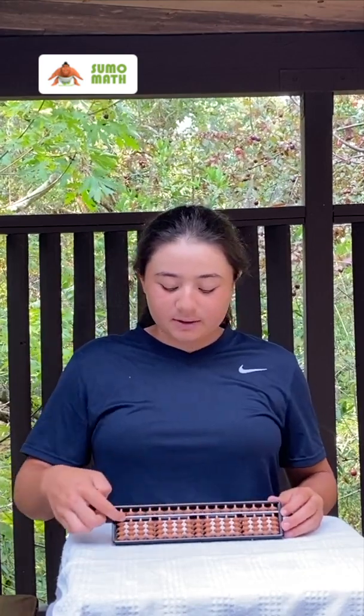Beetle II is all about the five bead, which is above the reckoning bar. It is also known as the heavenly bead because it is closer to heaven. Its value is always five, unlike the earthly beads with a value of one each.